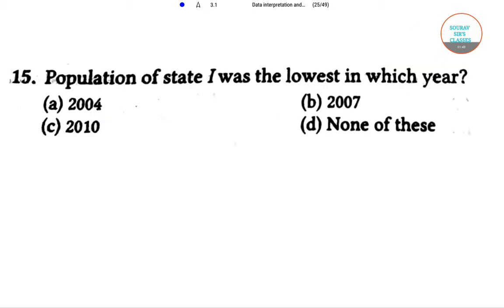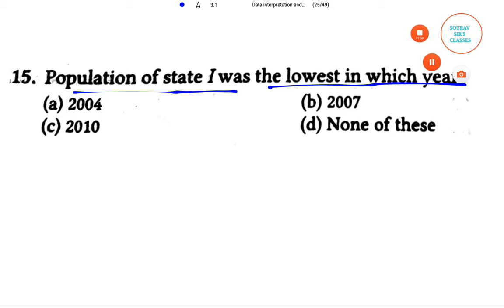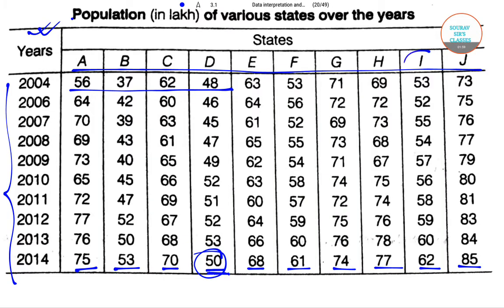This question asks: the population of state I was the lowest in which year? Let's go to the table. This is state I, and we have to find out in which year state I had the lowest population.